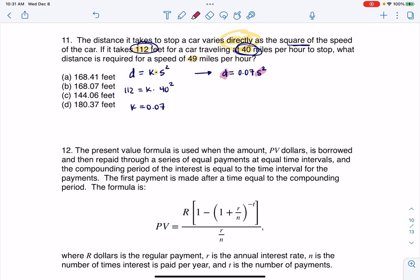And you can see in the question, it says what distance is required for a speed of 49 miles per hour. So I'm going to take that 49, and I'm going to plug it in here. So I'm going to say this is going to be equal to 0.07 times 49 squared.